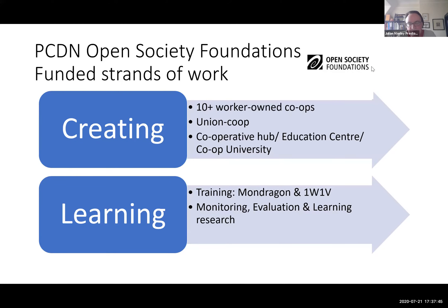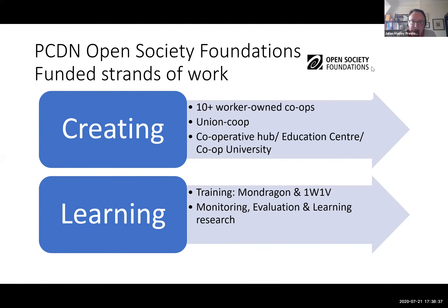Recently the Preston Cooperative Development Network has received some funding from the Open Society Foundations, which has helped us to continue developing a cooperative democratic society within Preston. We're creating 10 worker-owned co-ops, a union co-op which brings trade unions into the development of worker-owned cooperatives, and we're creating the education centre. We're bringing in training from Mondragon and from a US organisation called One Worker, One Vote. We're monitoring all of this to feed back the lessons learnt — things that went right and things that went wrong — to the Open Society Foundations so they can spread their funding appropriately.